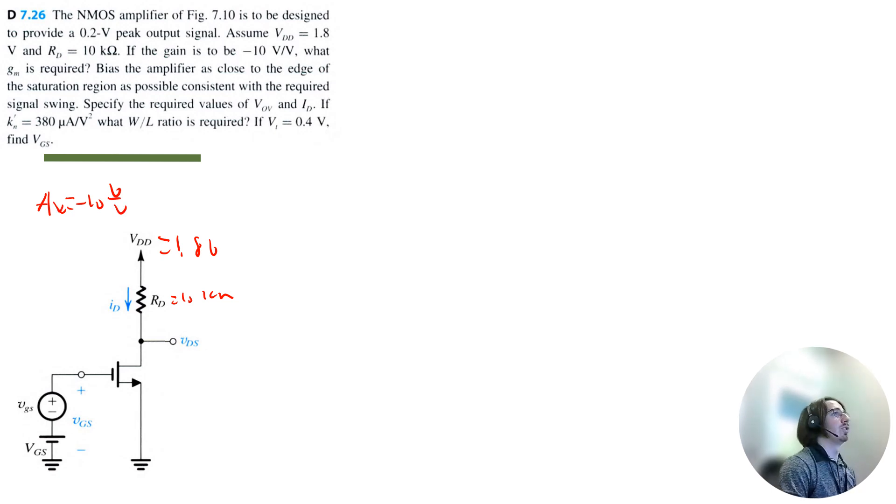So the first question is what GM is required. There are a lot of questions here, so what is the GM? We can use the following equation: gain is equal to negative GM, which is the transconductance by the way, multiplied by RD.